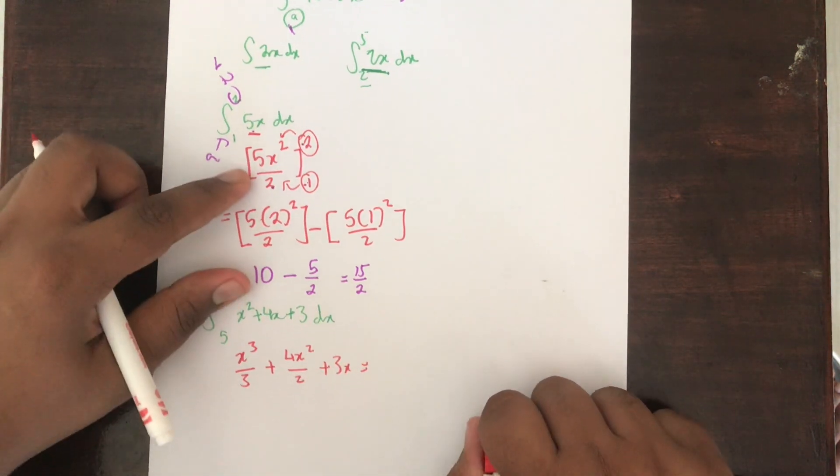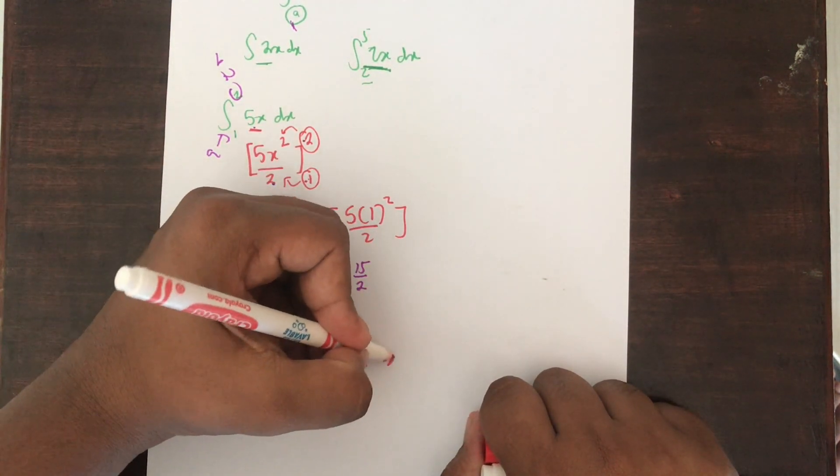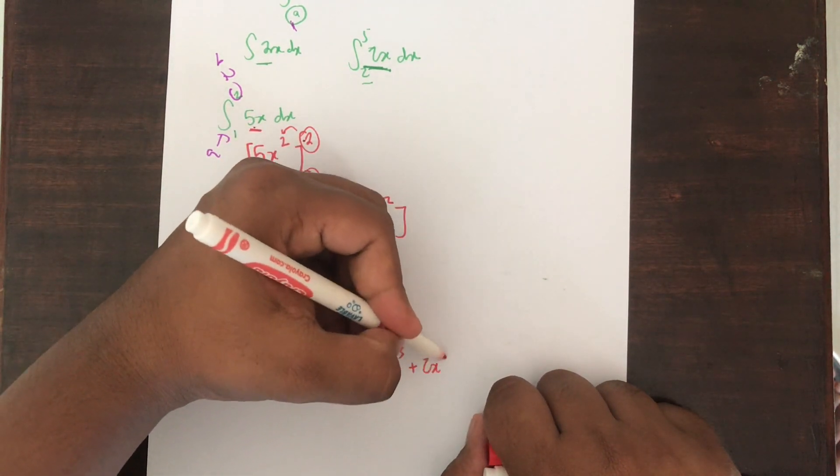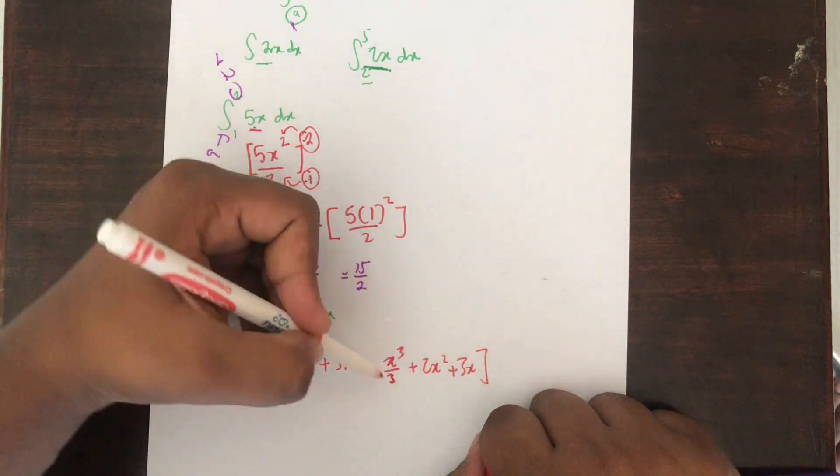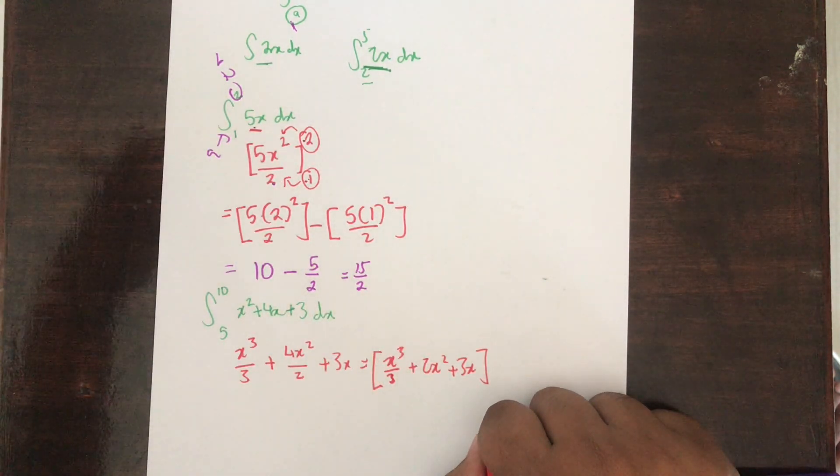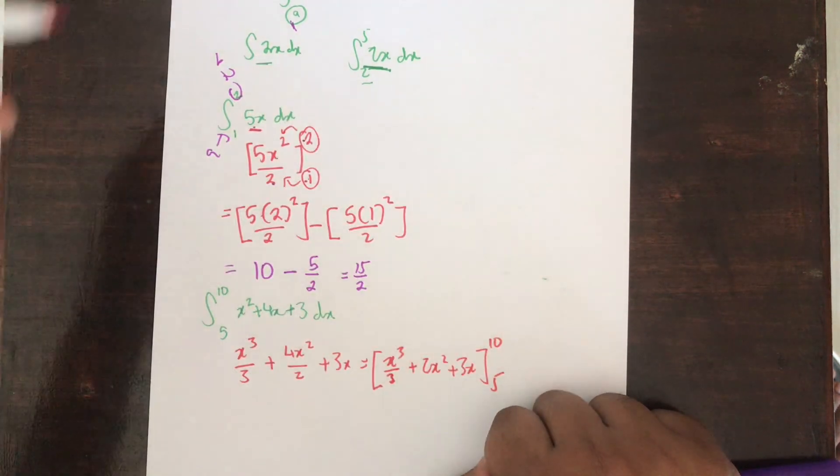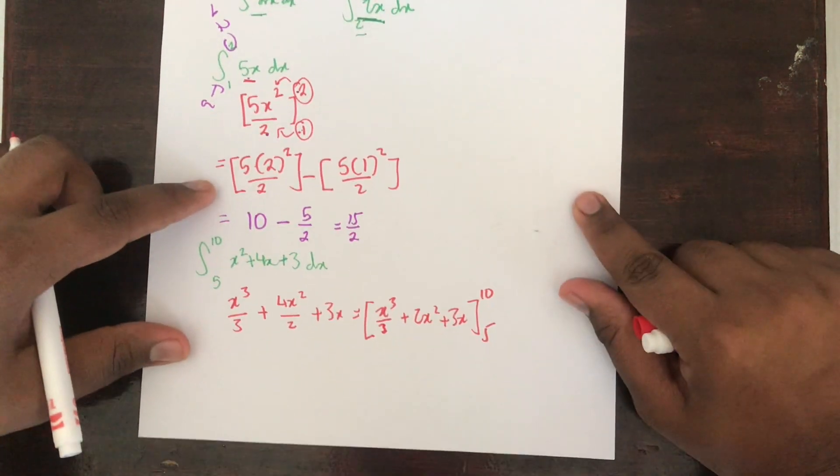That gives you x cubed divided by 3 plus 4x squared divided by 2 plus 3x. I just want to simplify this to give you x cubed over 3 plus 2x squared plus 3x. Now you are integrating this as a definite integral, so you need to put the limits 10 and 5.